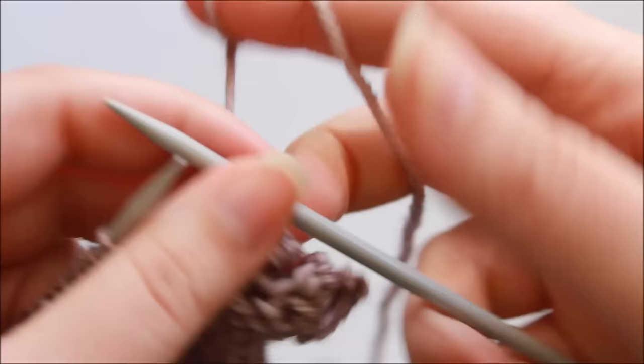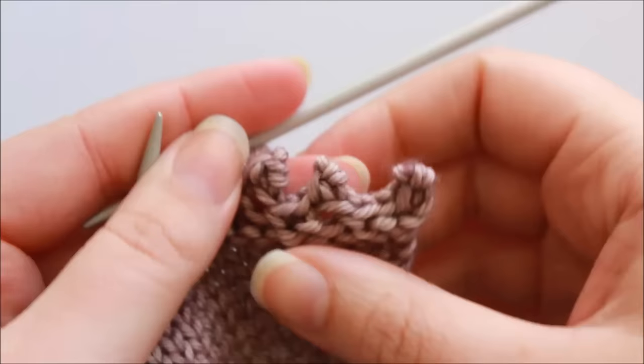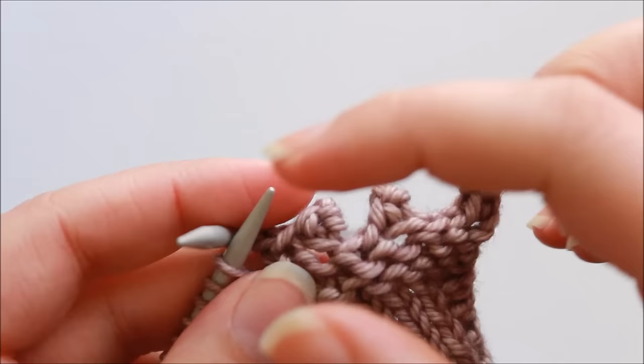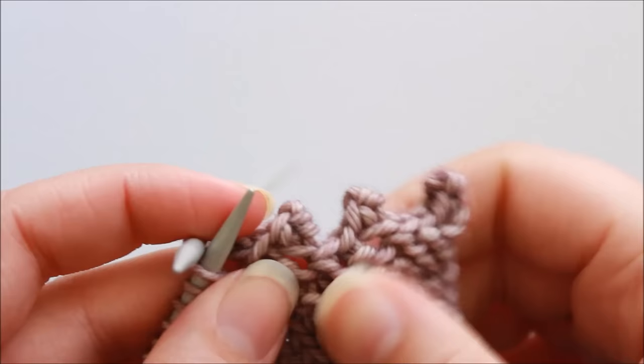And you just continue to do that all the way along your work until you get to the very last stitch, and you pull that stitch nice and wide, pull your working yarn through it and tighten off to secure. And that's the picot bind off method.